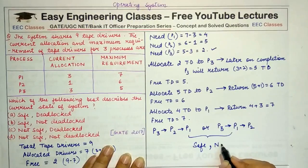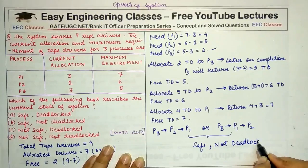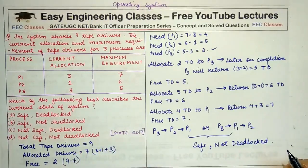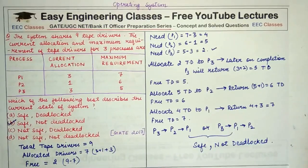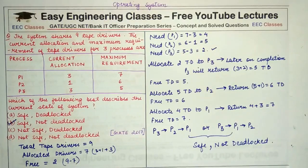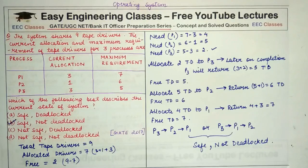This state is not deadlocked because the resources are allocated in such a way that we can meet the requirements of all processes in one sequence or another. That's all for today's lecture. If you understood the question, please like and share this video, subscribe to Easy Engineering Classes for more tutorials, and mention in the comments how you found the video. Thank you for watching.